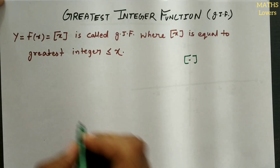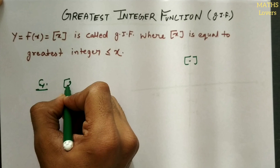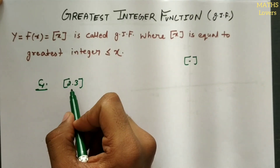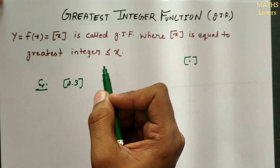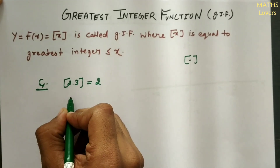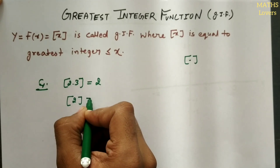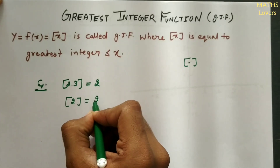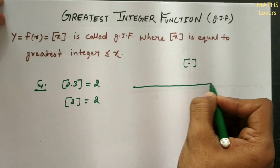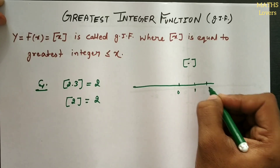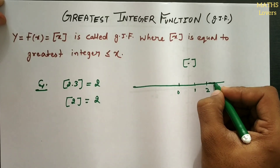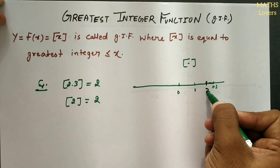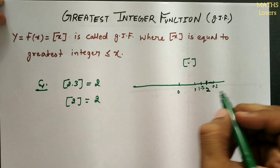For example, if I take 2.3, the greatest integer less than or equal to 2.3 is 2. Similarly, if x = 2, the greatest integer less than or equal to 2 is 2 itself. On the number line with 0, 1, 2 marked, 2.3 lies here so the greatest integer is 2. Similarly, for 1.7, the greatest integer is also 1.